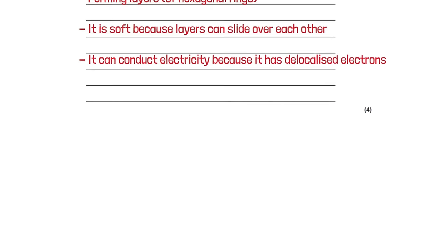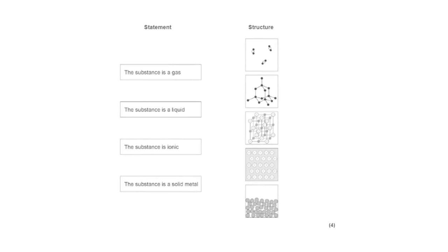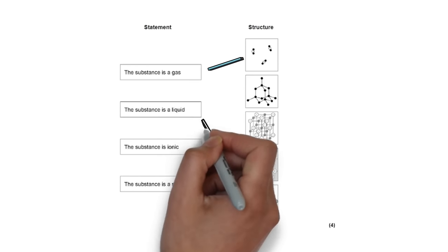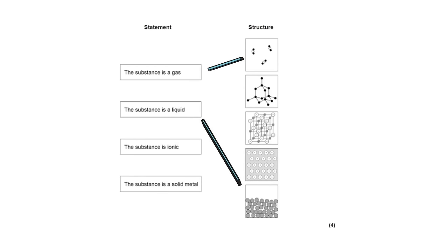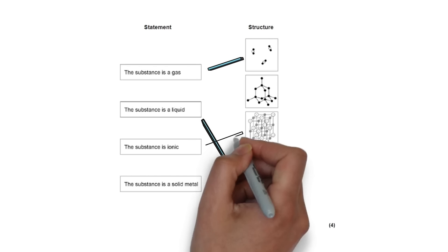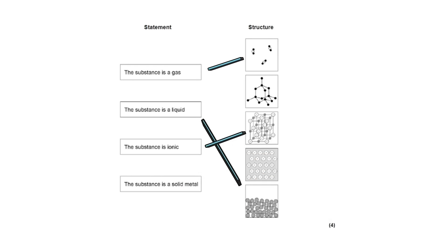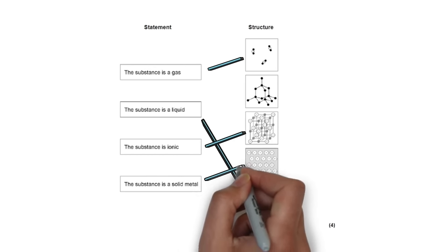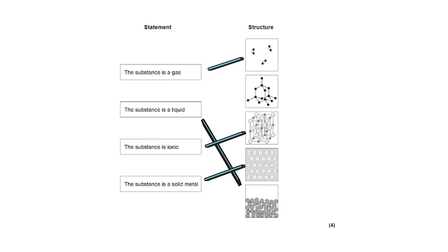A format question asks us to match structures to statements. Labelling the gas and liquid should be straightforward. A substance that is ionic needs bonding between a non-metal and a metal — that's the third one. A substance that is a solid metal is the fourth one, because we can see positively charged metal ions.